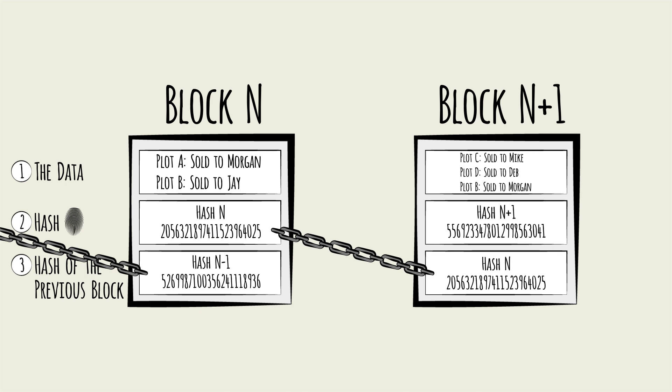For example, imagine attempting to change the buyer of plot A to Mike. The change in data would automatically change the hash, and suddenly the link to the next block in the chain has been broken.